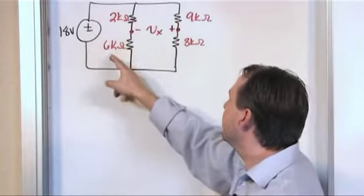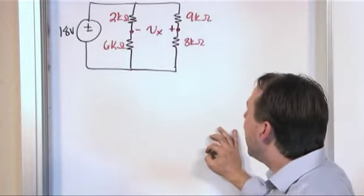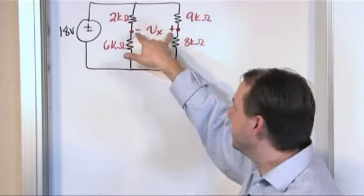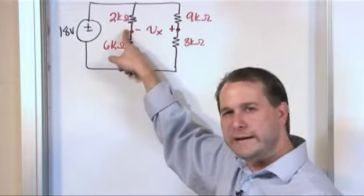This is 2 kiloohms, 6 kiloohms, 9 kiloohms, 3 kiloohms. What you're asked to find is the voltage across this empty air here, basically from this terminal between these two resistors to this terminal between these two resistors.